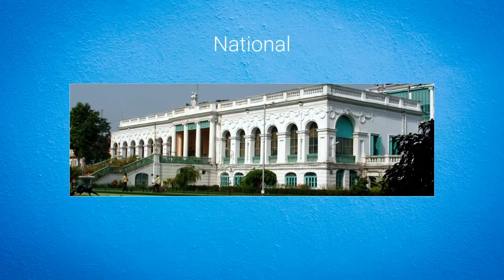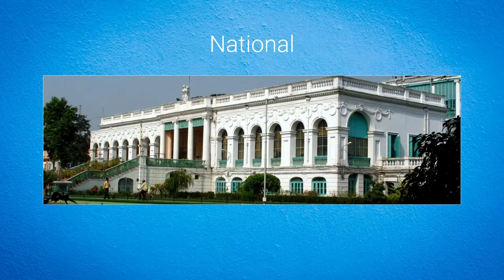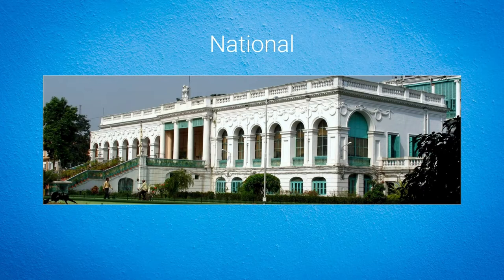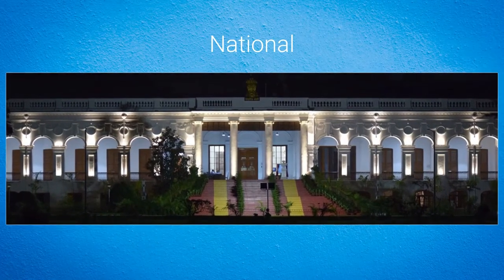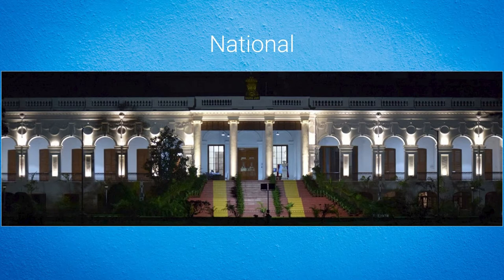I begin with the National Library. Every nation has a National Library. Like we have our National Library of India, situated in Kolkata. Before Independence it was called the Imperial Library by the Britishers. Now it is called the National Library. Here on the screen you can see this is our National Library — how magnificently and monumentally it is built.